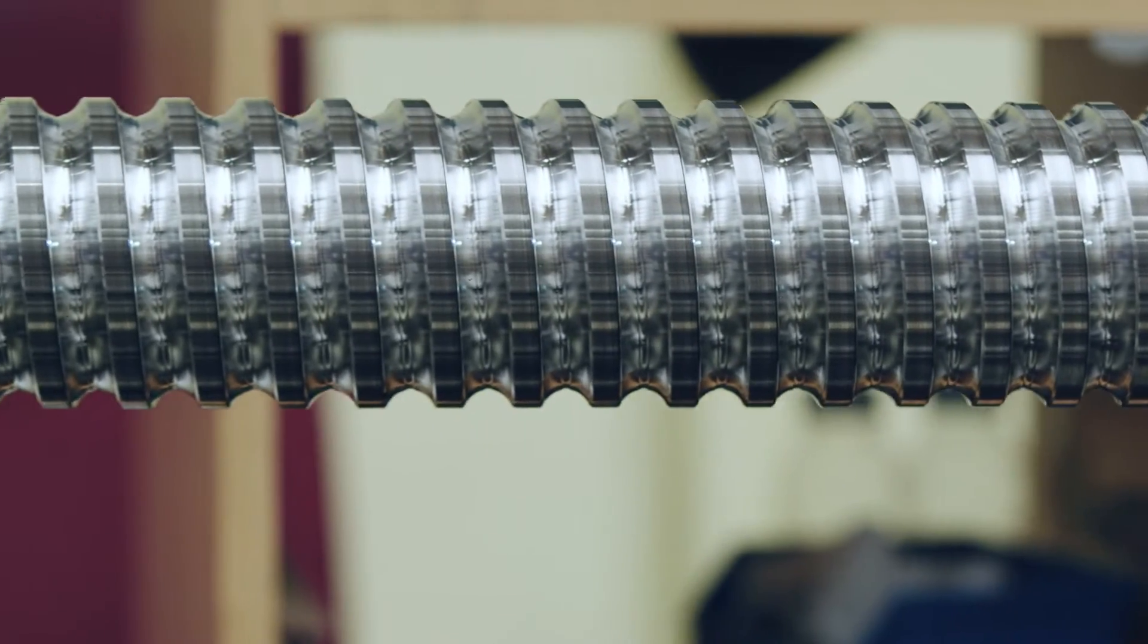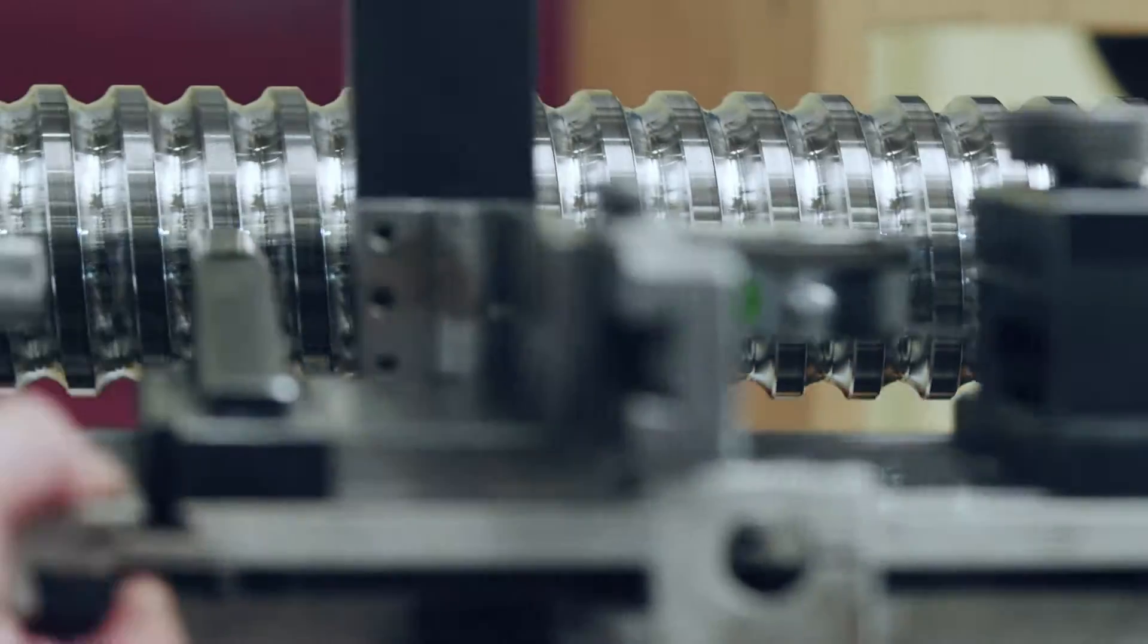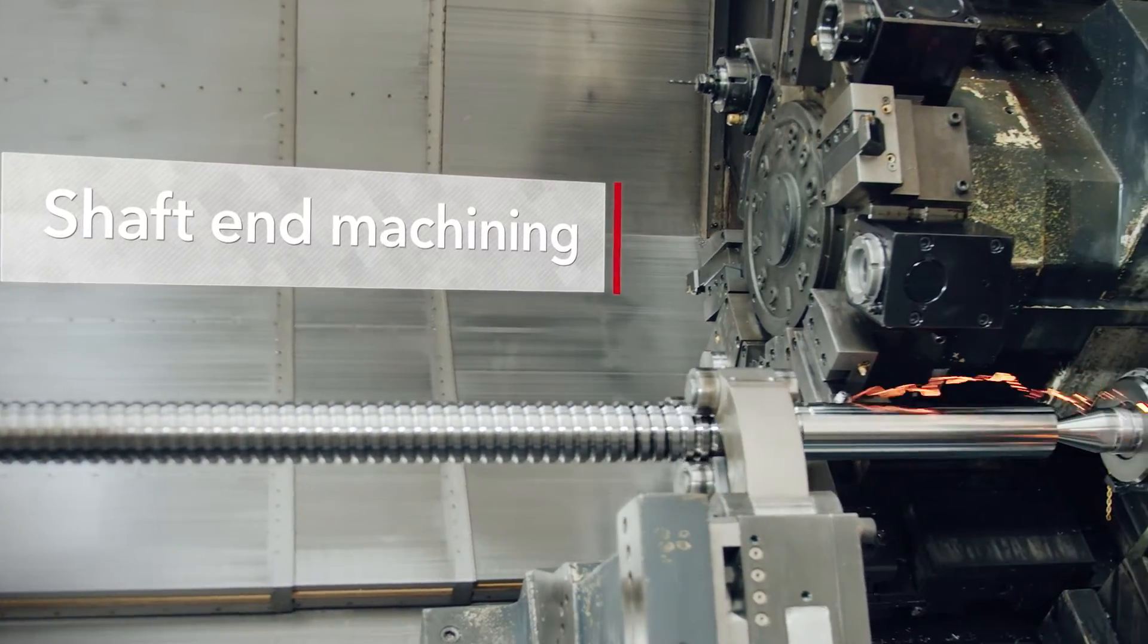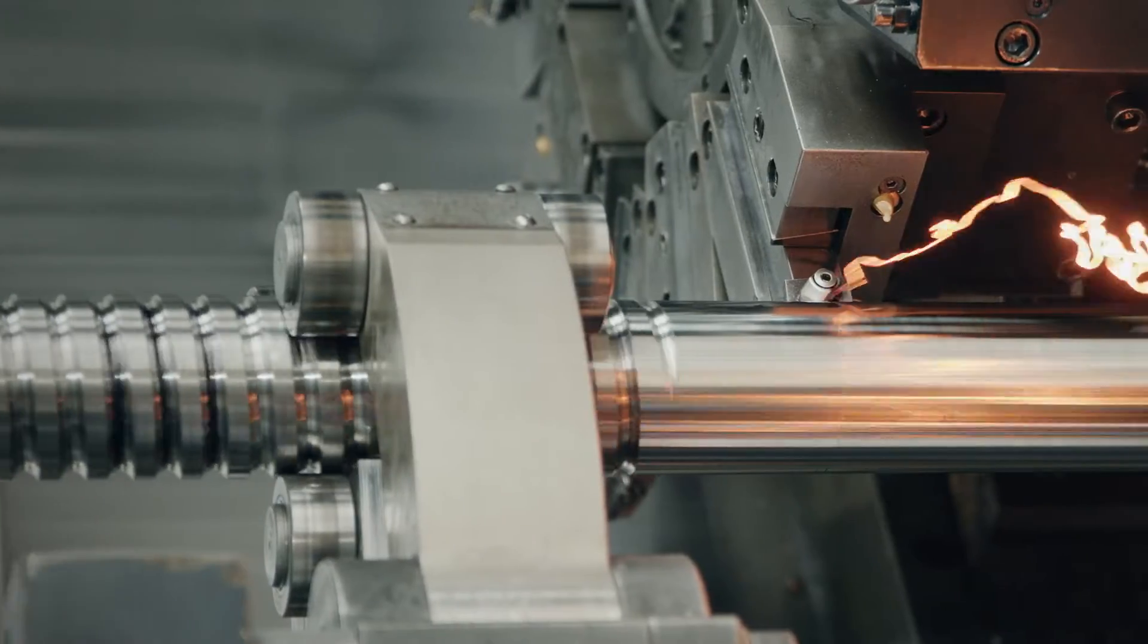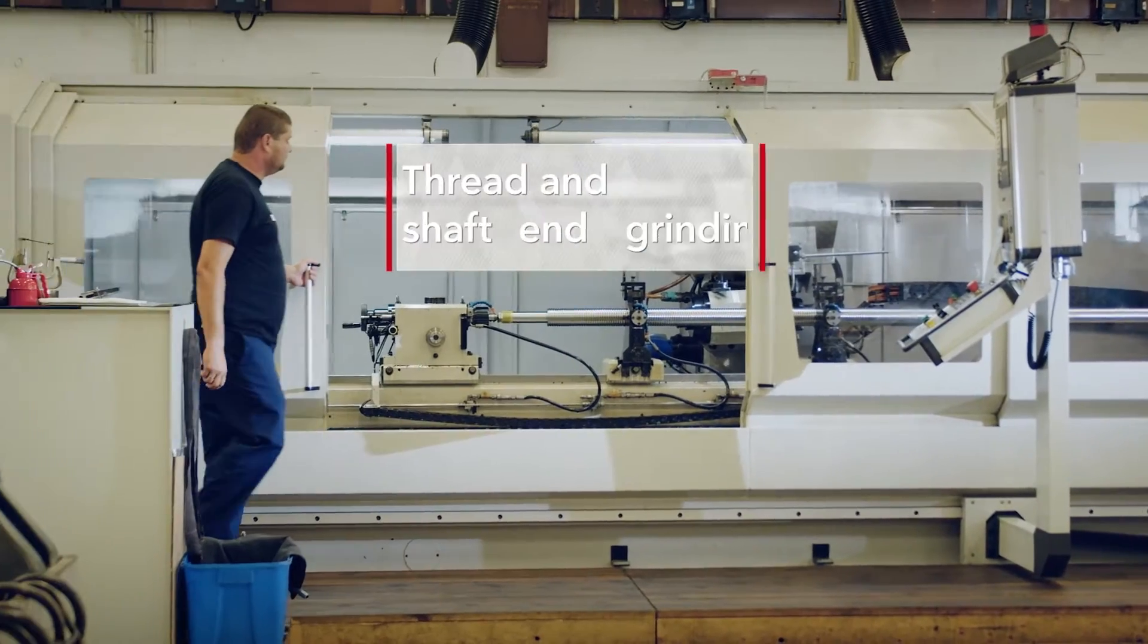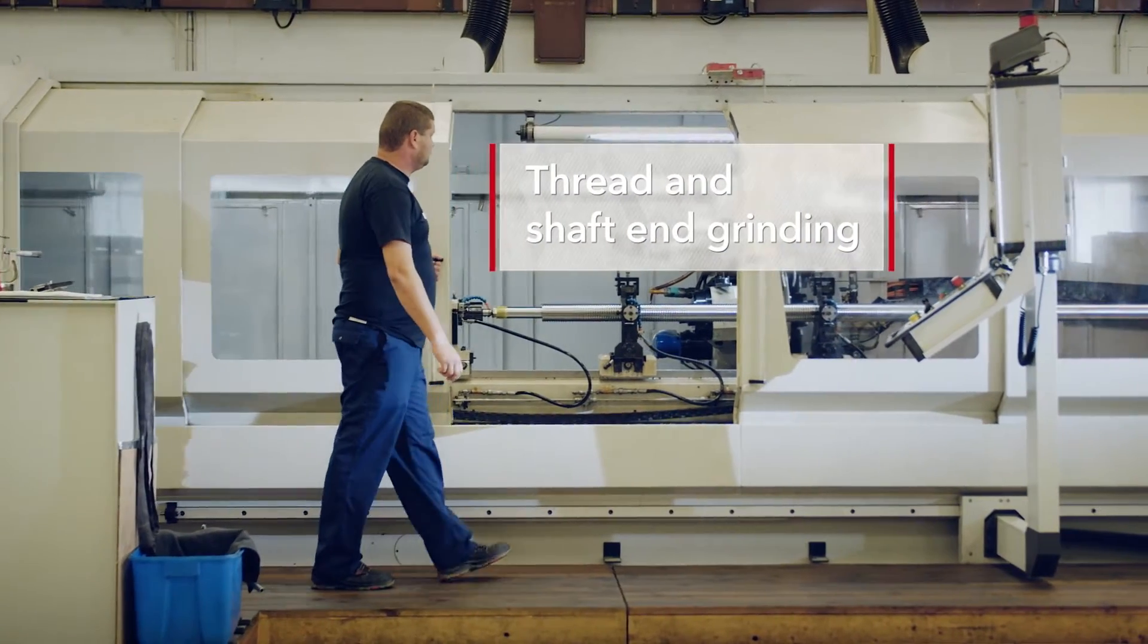The shaft end is further machined to fit perfectly into the final assembly. The shape of the shaft end is fully customizable to fit the customer's needs. The last step, ensuring that the ball screw fits perfectly into an assembly, is the grinding of the shaft ends and shaft ball thread.